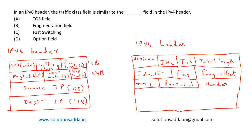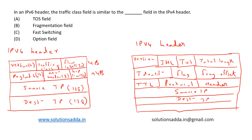Then we have source IP, then destination IP, and finally options and data.